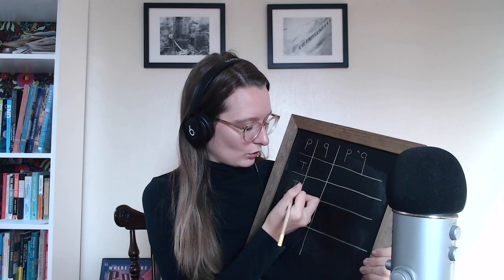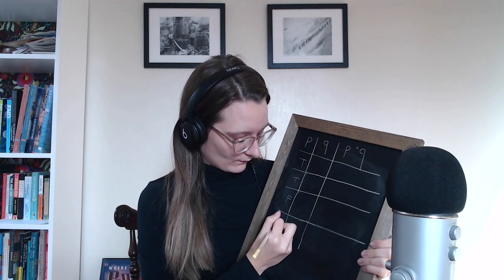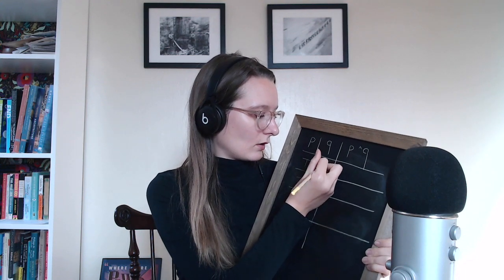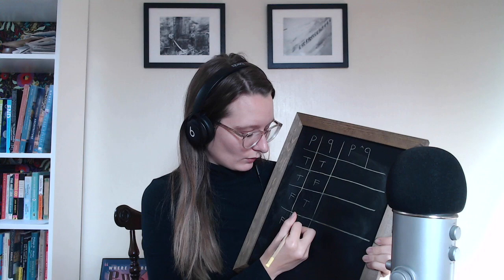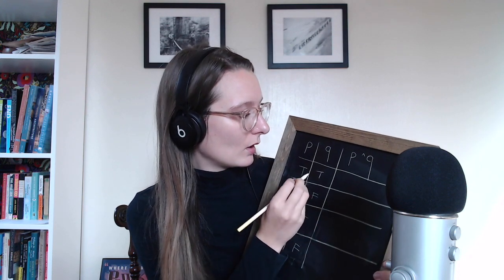So what we're going to do is we're going to put in values of true and false for each of these simple statements, and then we'll know, based on those, whether or not this statement is true or false. So we're going to do: true, true, false, false for P, and true, false, true, false for Q. If P is true and Q is true, is the statement P and Q true or false? That would be true, because they're both true and that's an 'and' — so true and true is true.